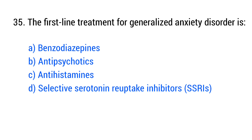Question number 35. The first-line treatment for generalized anxiety disorder is? The right answer is option D: Selective serotonin reuptake inhibitor (SSRI).